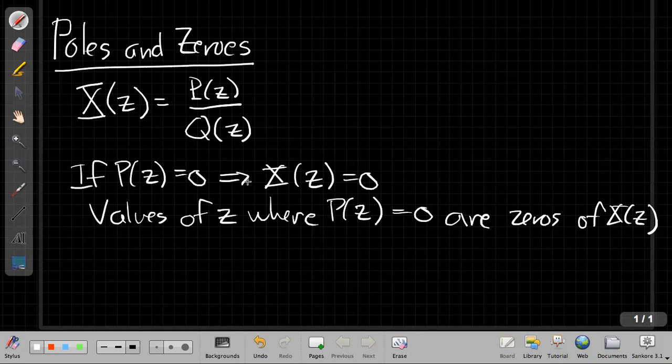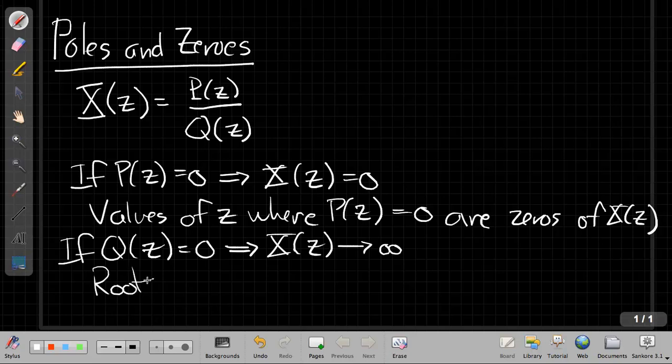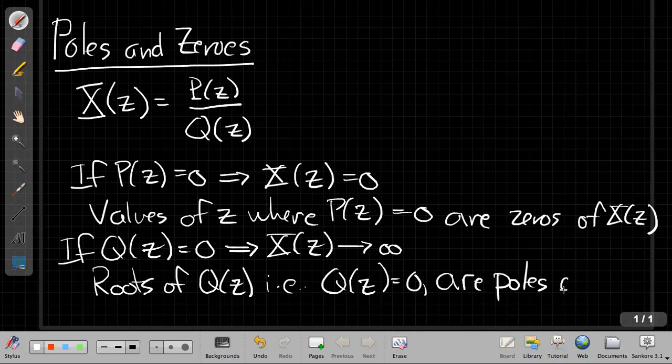Those are the roots of the numerator. And what happens at the roots of the denominator? What happens for the values of Z where Q(Z) equals zero? Well, X(Z) is going to infinity, because this fraction will go to infinity if the denominator is zero. So the roots of Q(Z), where Q(Z) equals zero, are what we call the poles of the Z-transform.